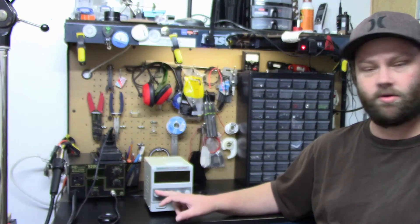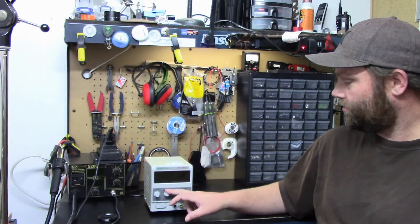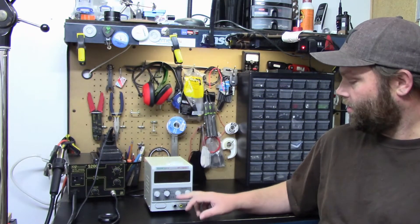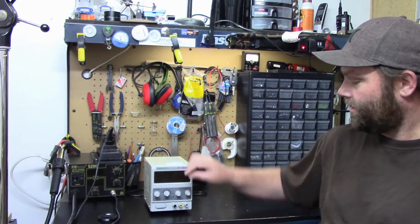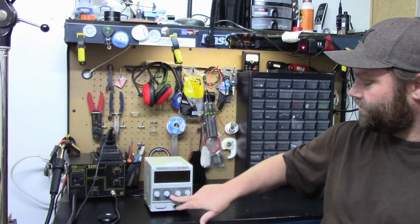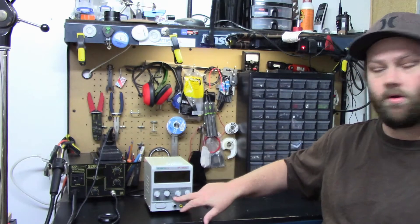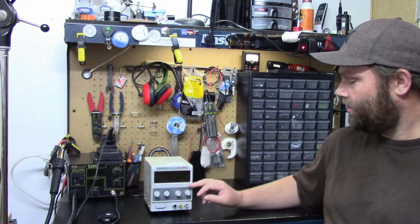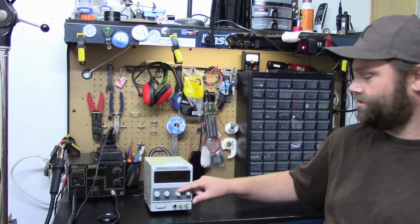You can adjust the current on the left. You can do a set voltage here. I have it set to the 0 to 15 over here so that way I can adjust my voltage with the voltage dials here.